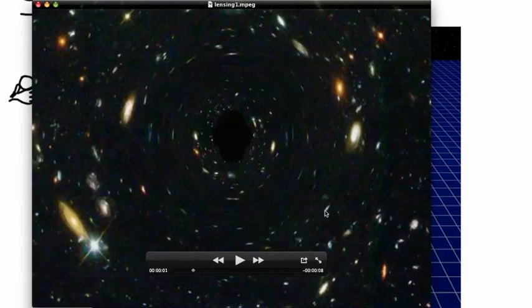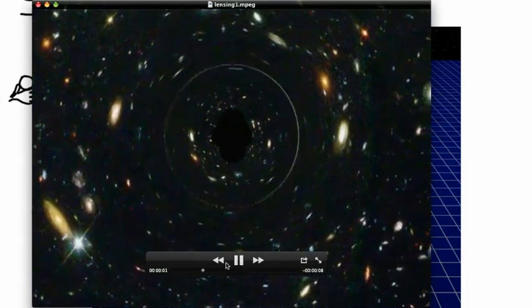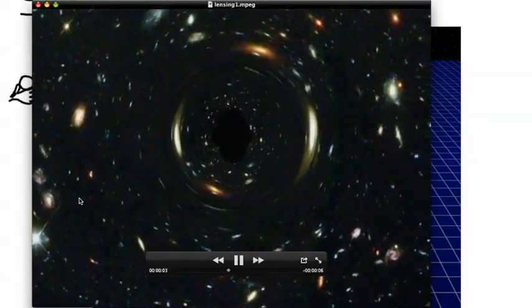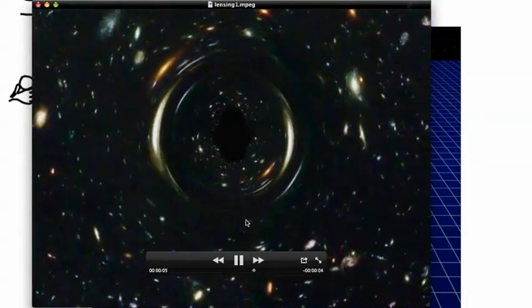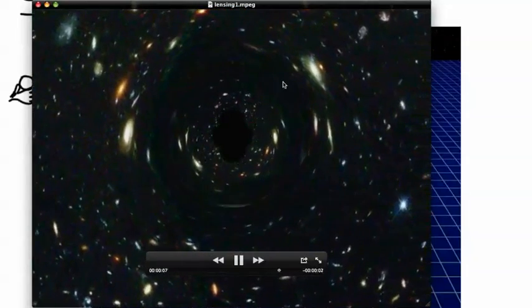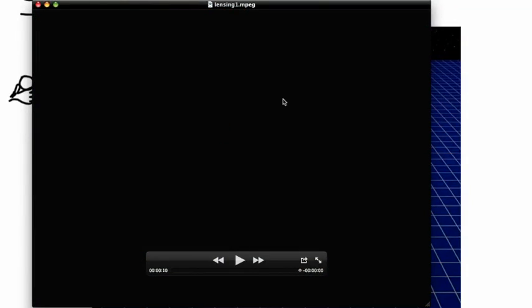In theory, if you had a gravitational lens, imagine a glass sphere passing in front of a picture with galaxies. As you move to the right, it distorts all the stuff. Can you imagine this glass sphere distorting everything?